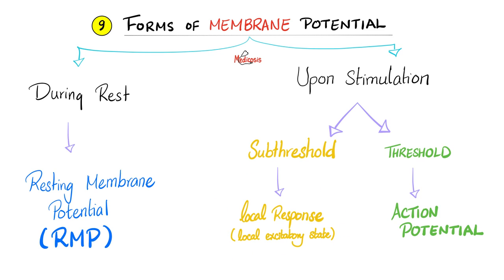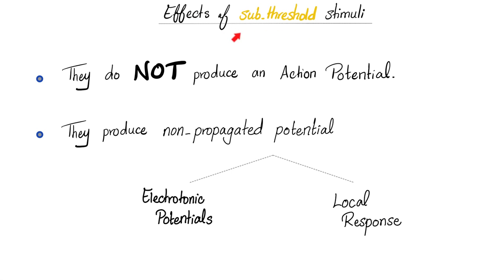So let's talk about the local response. It's the effect of the subthreshold stimulus — not threshold, subthreshold. It does not produce an action potential — that's the all or none law. These are the non-propagated potentials. They could be electrotonic potentials such as catelectrotonus and anelectrotonus.